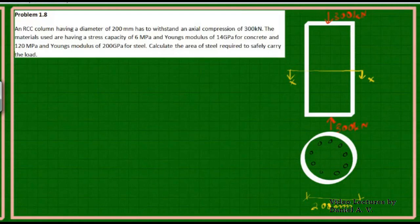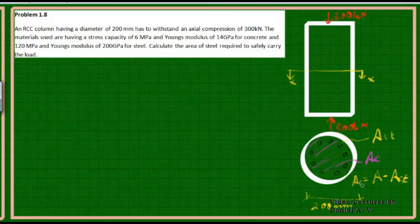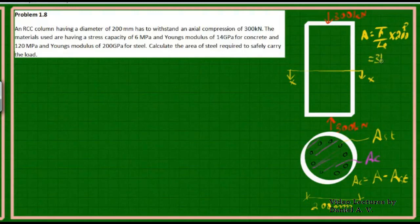In plan, the section appears as circles for steel bars. The total area of steel is AST, and the area of concrete AC equals total area minus AST. The total area is (π/4) × 200² = 31,400 mm².